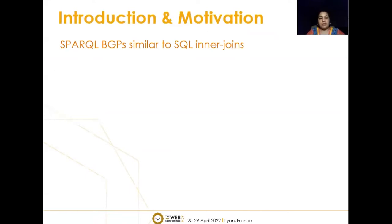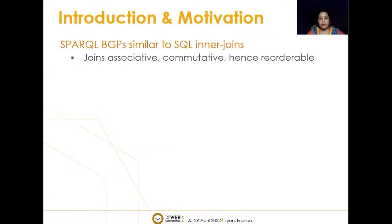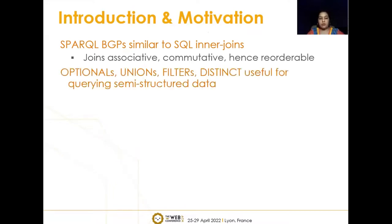SPARQL basic graph pattern queries are similar to SQL inner joins. These joins are associative, commutative, and hence reorderable. Meaning that if a basic graph pattern query has three joins over four triple patterns, then these three joins can be evaluated in any order without affecting the correctness of the results.